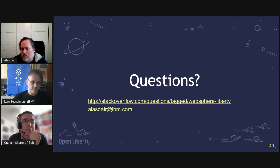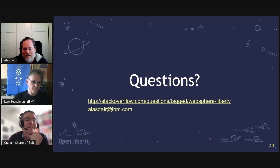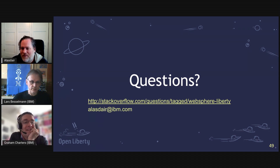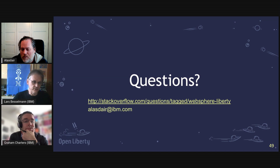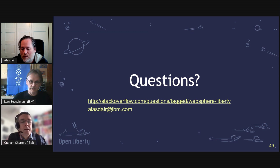A workaround we've used with customers is putting two EJBs into the same Liberty instance. For customers wanting to go into containers, remote EJBs also present a challenge there because we don't have the workload management for inbound remote EJB calls that we have for inbound HTTP. Next question is for Graeme: how do we position Liberty versus Quarkus regarding cloud-native applications?